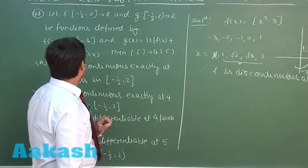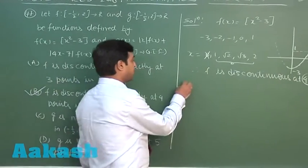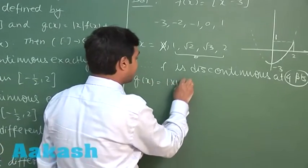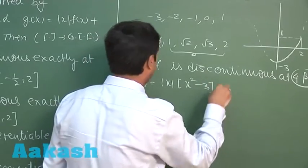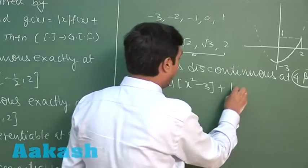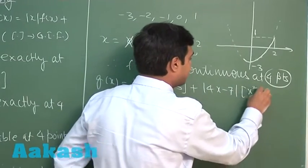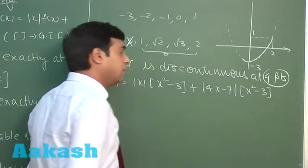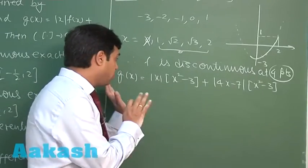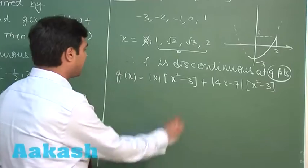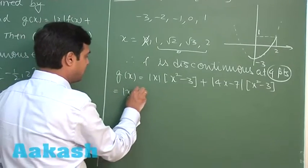Let us talk about the next function that is g. g(x) is mod x times greatest integer of x squared minus 3, plus mod of 4x minus 7 times greatest integer of x squared minus 3. Now we have to talk about the non-differentiability of this function.